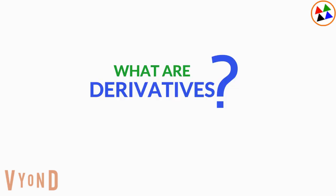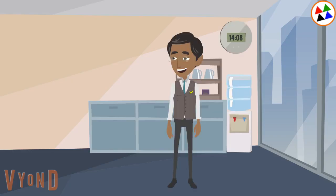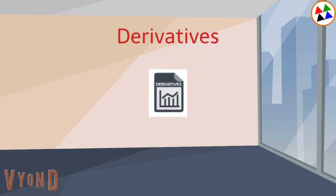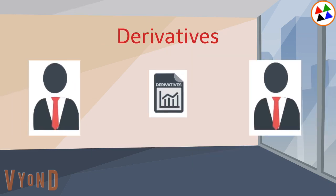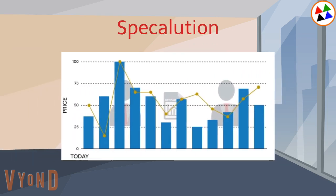What is a derivative? This is Suresh — Suresh is a new equity investor who wants to know about derivatives. Derivatives are a contract between two or more individuals which is based on an estimate of the future price of an asset.